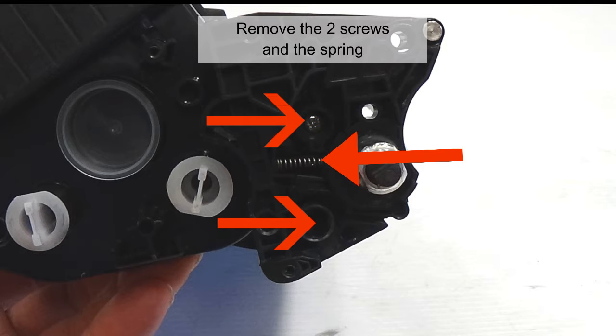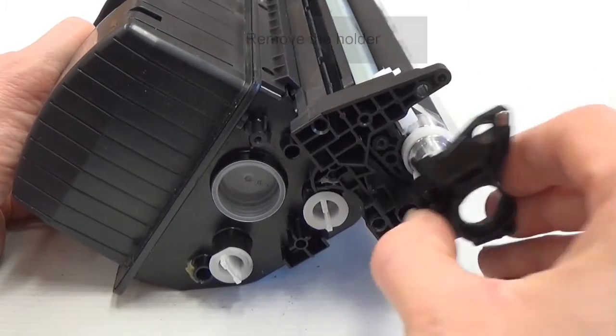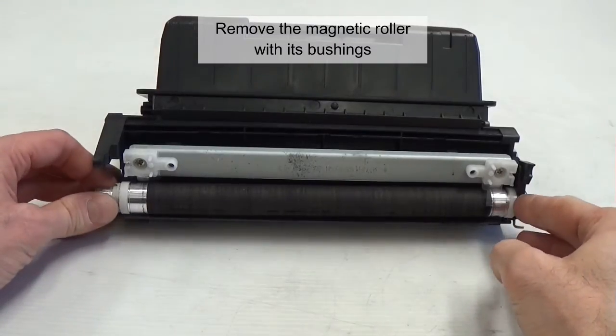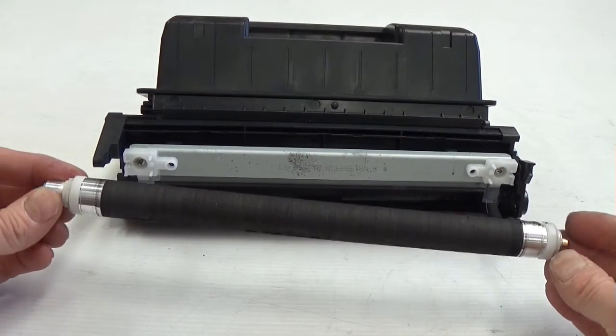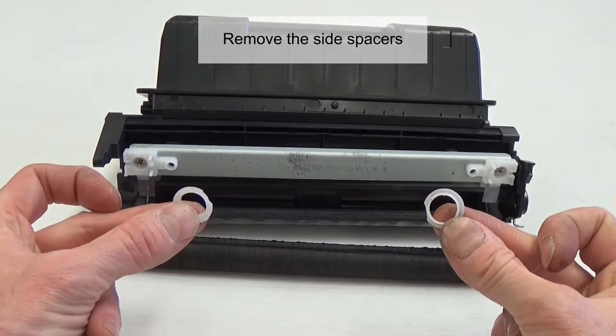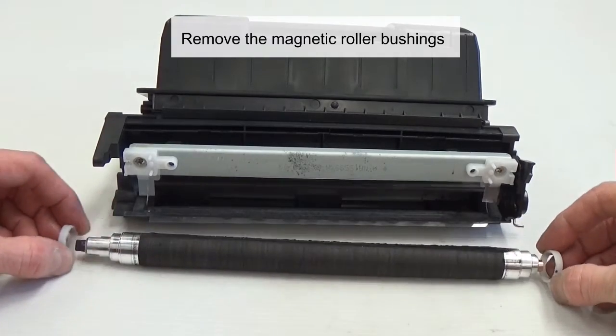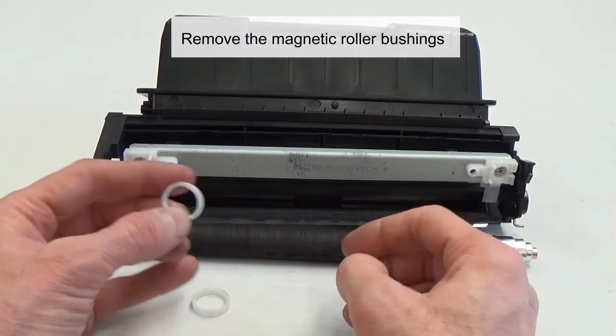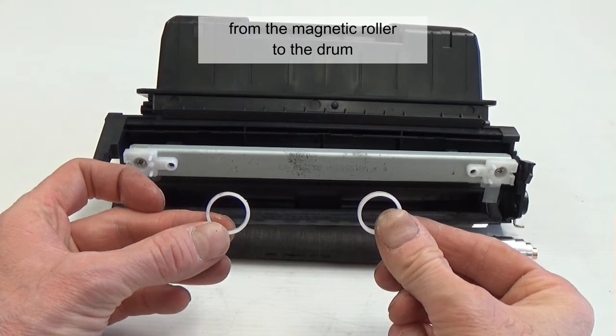Remove the two screws and the spring. Remove the holder. Remove the magnetic roller with its bushings. Remove the side spacers. The magnetic roller with its bushings must keep a specific gap from the magnetic roller to the drum.